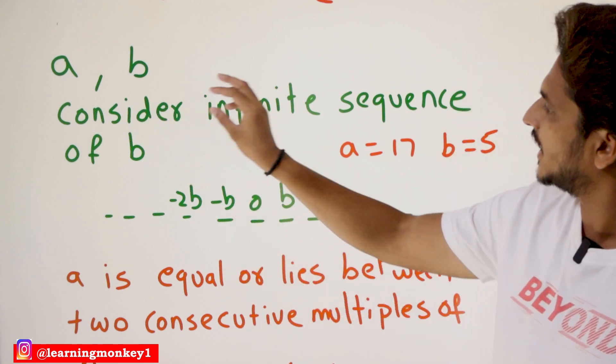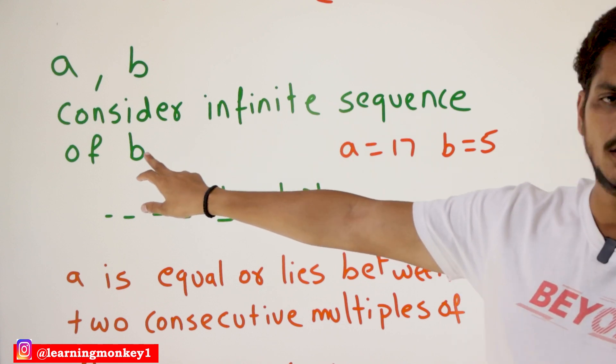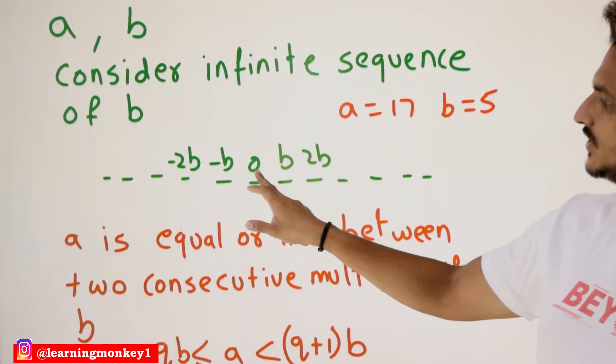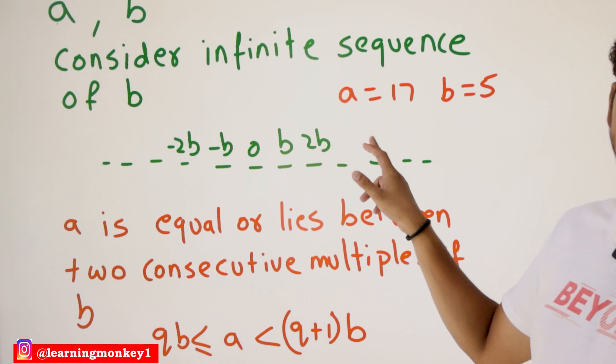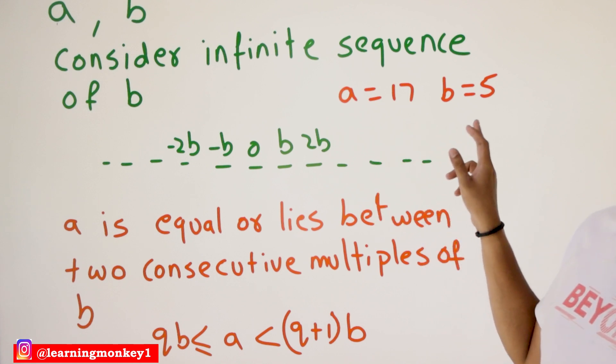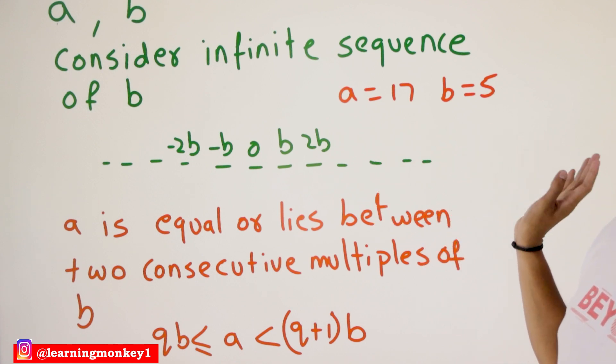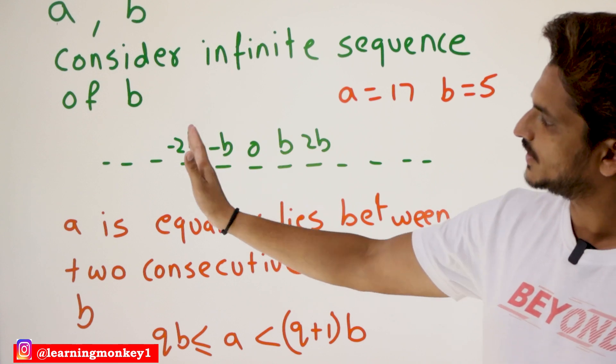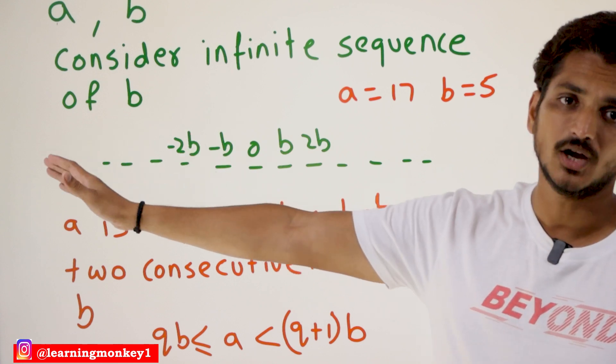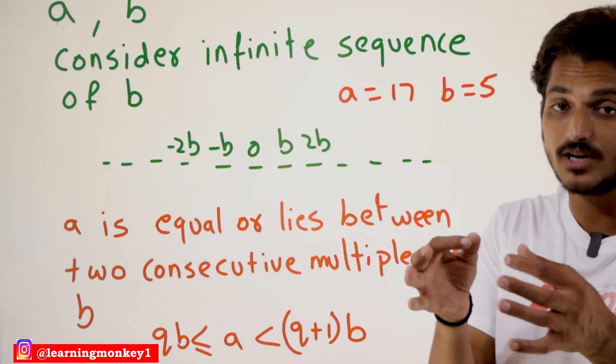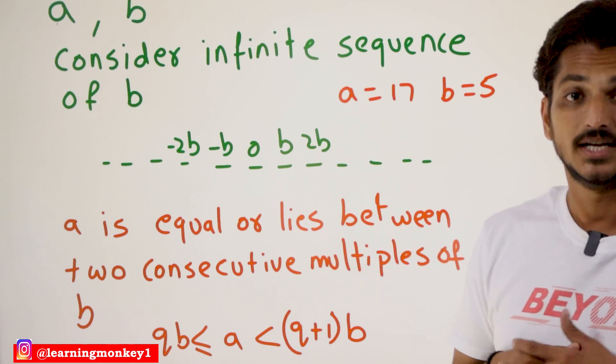Now we need to consider the infinite sequence of B, means 0, B, 2B, 3B, 4B, 5B up to positive infinity. Similarly, minus B, minus 2B and so on up to negative infinity. This is the infinite sequence of B.